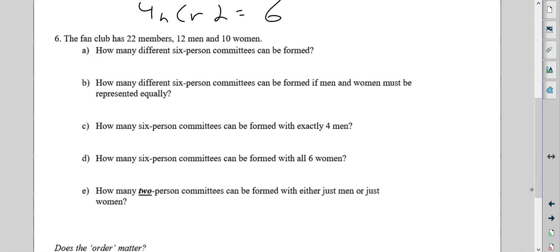All right. Fan club has 22 members, 12 men, 10 women. How many different six-person committees can be formed? Well, that's just 22 people, six-person committee, order doesn't matter. So that's NCR. That's going to be 74,613, because the order does not matter. It's just people.